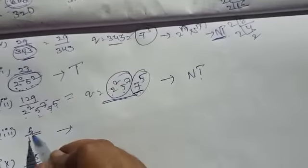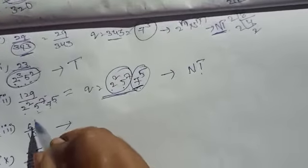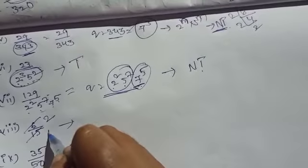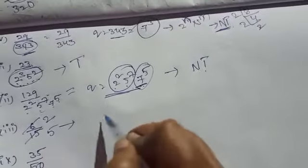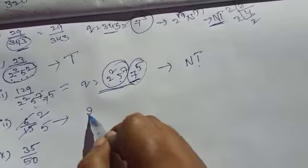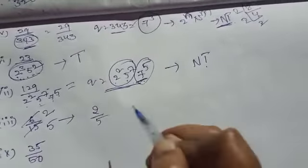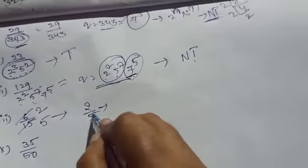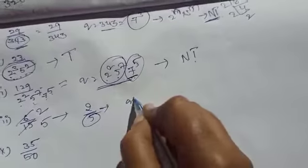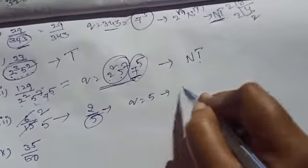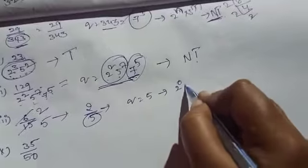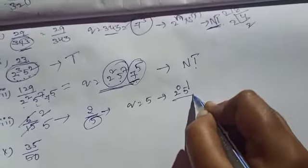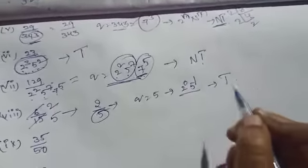Next: 6 by 15. Here 3 is common, so this fraction becomes 2 by 5. Here q is 5. 5 can be written in the form of 2 power 0 into 5 power 1. So this is a terminating decimal.